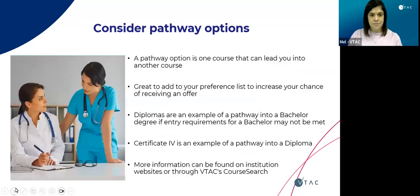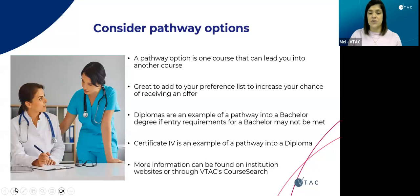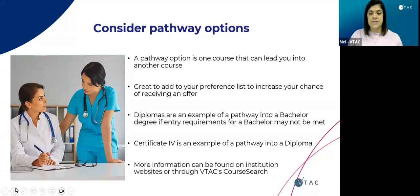The first thing we want to talk about regarding course application is pathways. Basically, a pathway is an option of a course that can lead you into another course. These are really important to add to your preference list in order to increase your chances of receiving an offer. An example might be a diploma as a pathway into a bachelor degree if you don't have the requirements to get directly into the bachelor. A certificate four is another example of a pathway into a diploma. Each individual course in course search will give you options of pathways you can utilise.